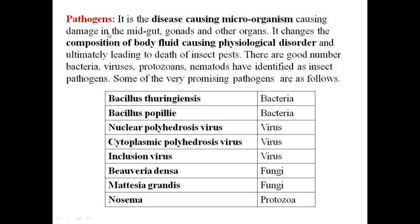The third biological agent is the pathogen — a disease-causing microorganism. Pathogens cause damage to the midgut, gonads, and other organs of insects. They change the composition of body fluid, causing physiological disorders and ultimately leading to the death of insect pests. A good number of bacteria, viruses, protozoans, and nematodes have been identified as insect pathogens.